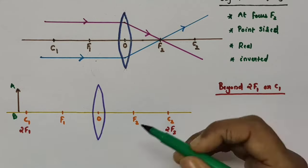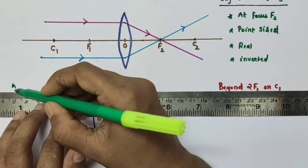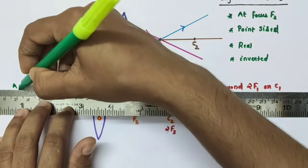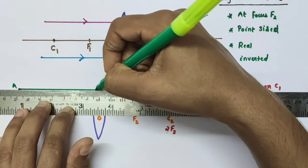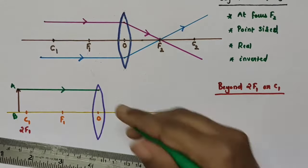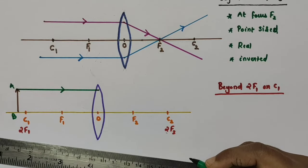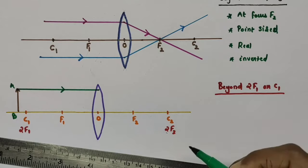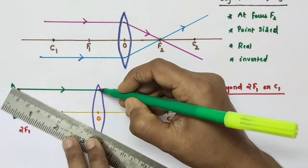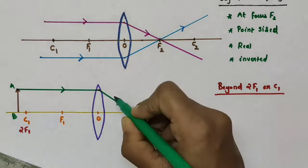Now we draw the ray diagram. We consider at least two rays coming from the same part of the object — from the top arrow part. First, I consider a ray of light emanating from the top part of the object and parallel to the principal axis. This is the incident ray. After refraction, a ray parallel to the principal axis passes through the principal focus on the other side — so after refraction this ray will pass through F2. This is the refracted ray.